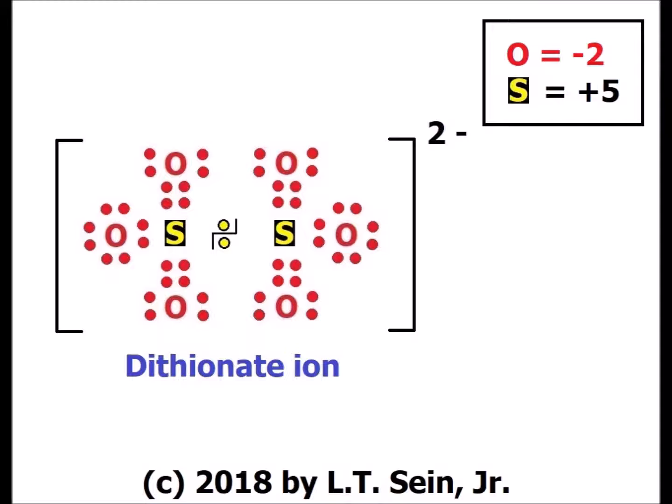For dithionate ion, S₂O₆²⁻, each of the two sulfur atoms has exactly the same environment. All electrons shared with oxygen are counted towards oxygen. For the sulfur−sulfur bond, each sulfur gets credit for one of the two shared electrons. Since each sulfur started with 6 electrons and ends up with only 1, that corresponds to an oxidation number of +5 for sulfur in dithionate ion.